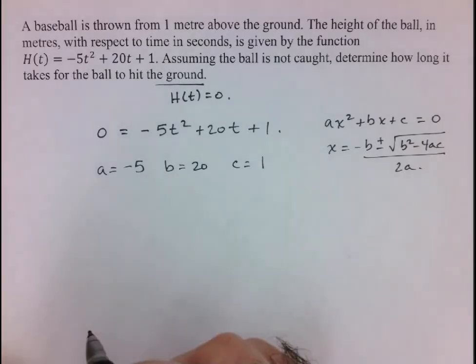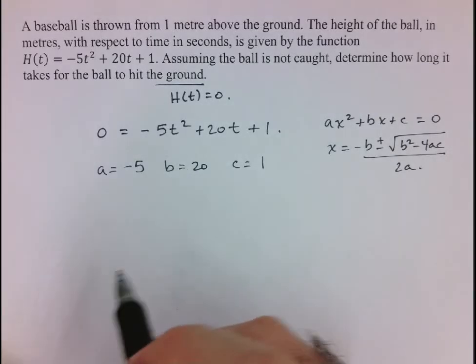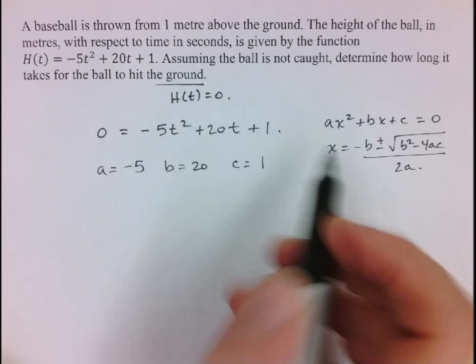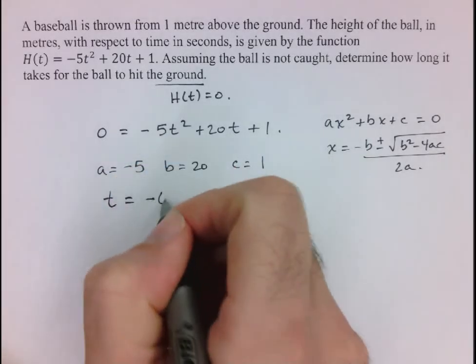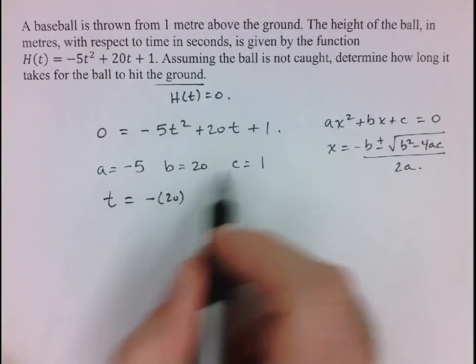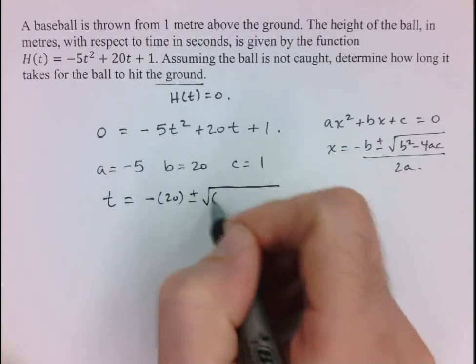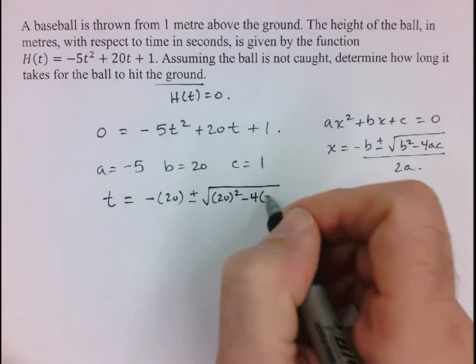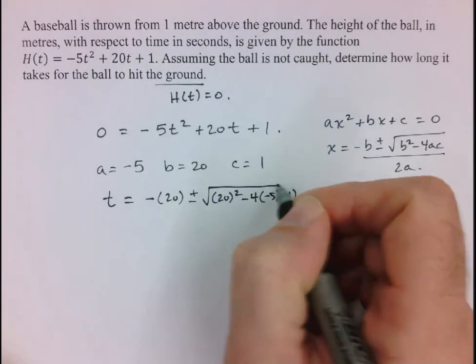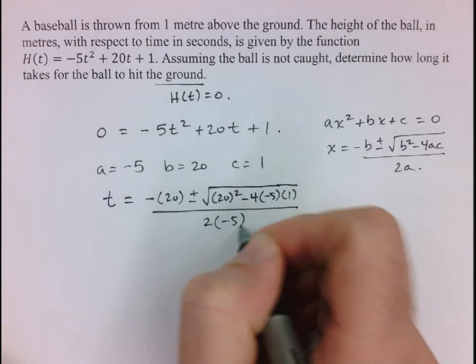Now that I've isolated these three components for the quadratic formula, I can now apply it. Now notice here my variable is t and not x, so I'm going to use the variable t equals, so negative b, so negative 20. I'm going to input these numbers now into my quadratic formula. So plus or minus the square root of b, 20 squared minus 4 times a, which is negative 5, times c, which is 1, and all of that is going to be over 2 times a, which is negative 5.